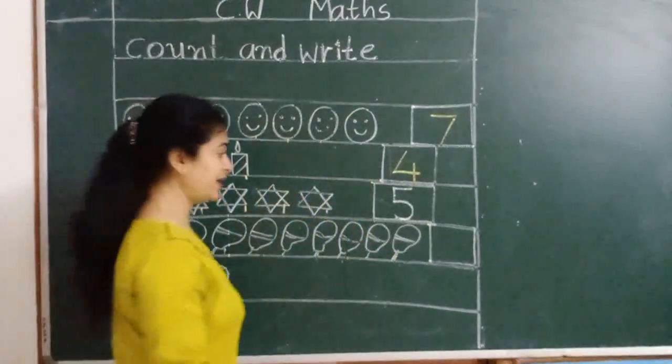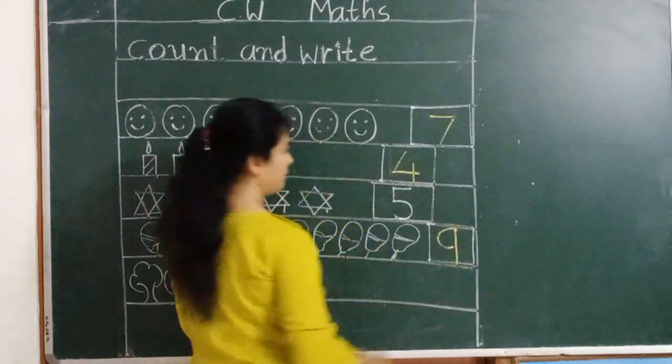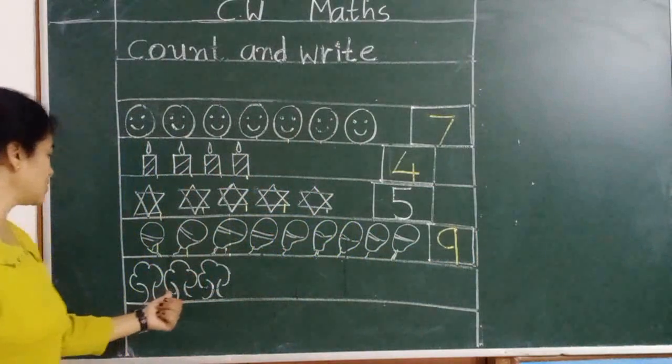How can we write number 9? Curve and standing line. Next number 9. Now next.